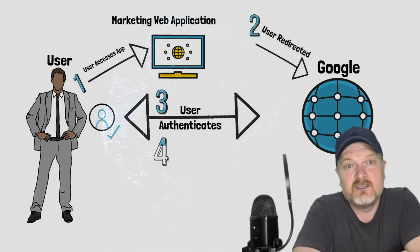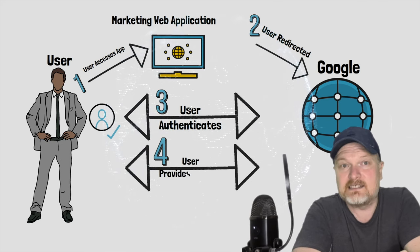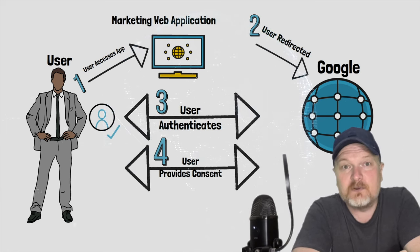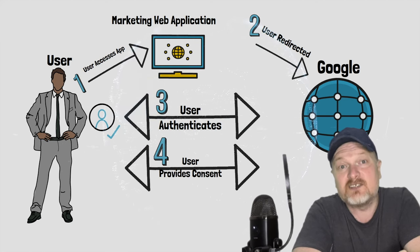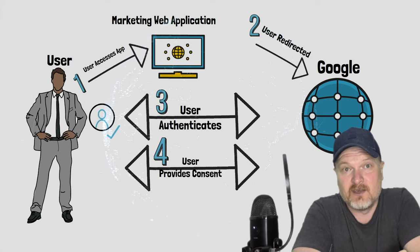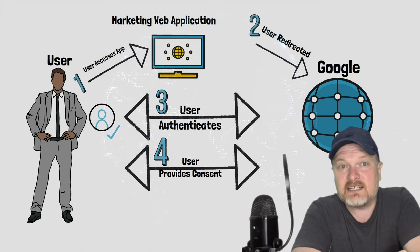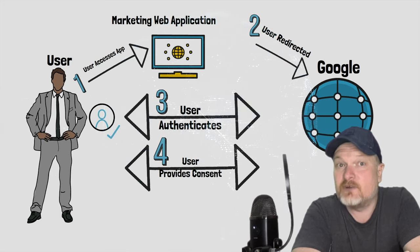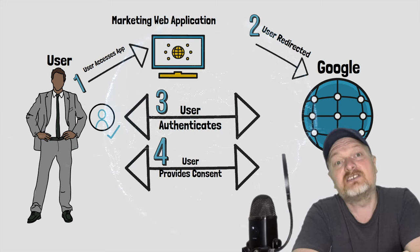The marketing web application requests read-only access to the user's Google contacts. This read-only access is specified in OAuth 2 through what's known as a scope. A scope is a mechanism that limits or restricts an application's access to a protected resource. In our example, the scope is read-only access — the marketing web application only needs read-only access to the resource.